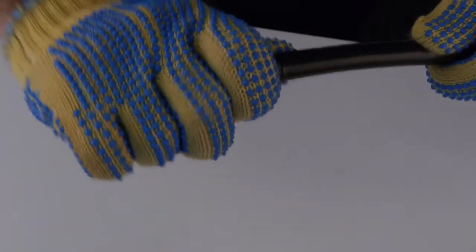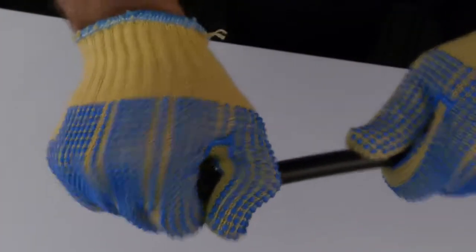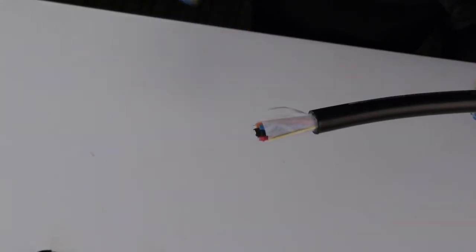Flex the cable slightly at the cut to complete the opening of the jacket. If necessary, adjust the cutting depth and repeat the process until the end piece of the jacket or armor can be pulled off the end of the cable.